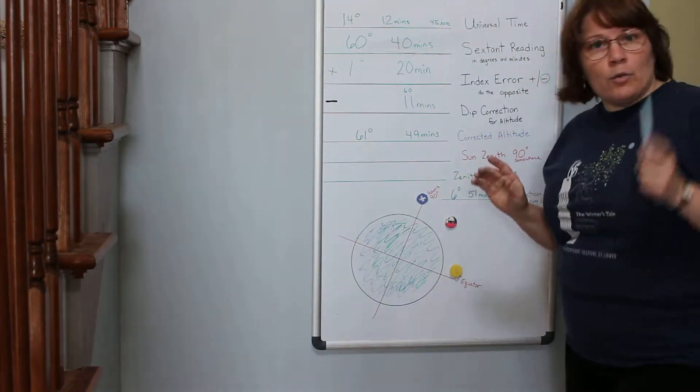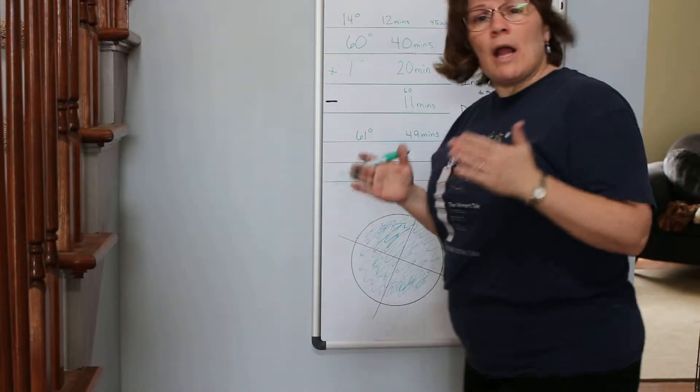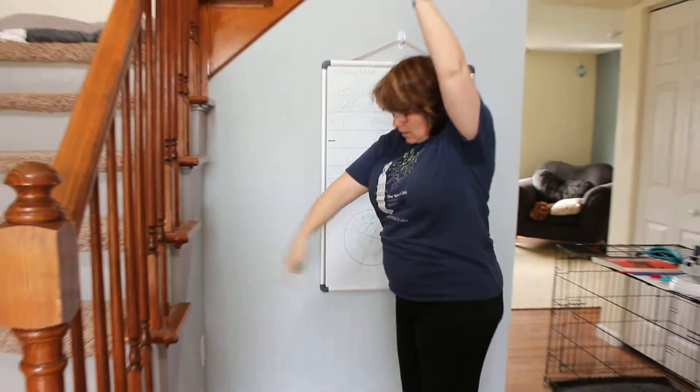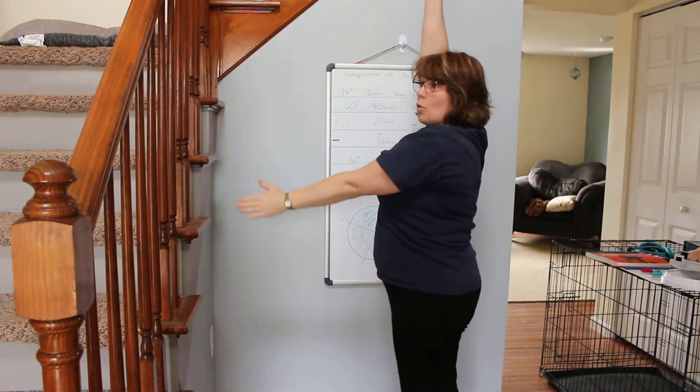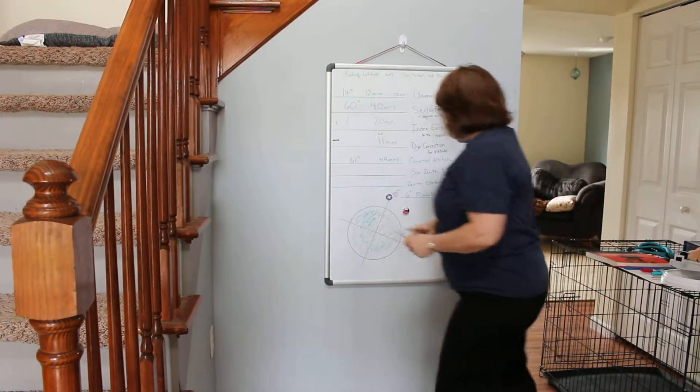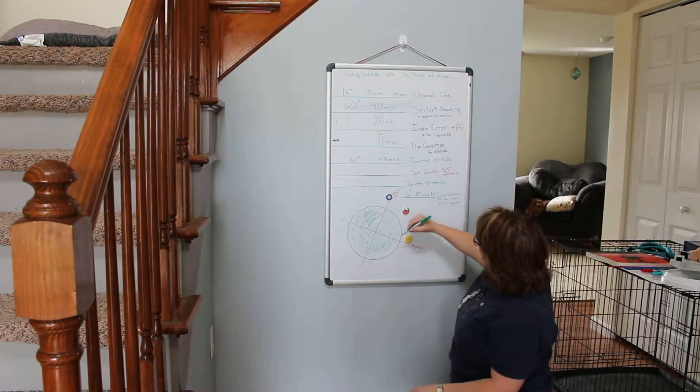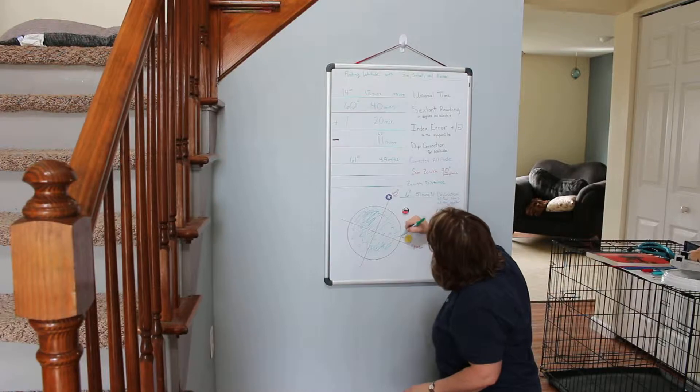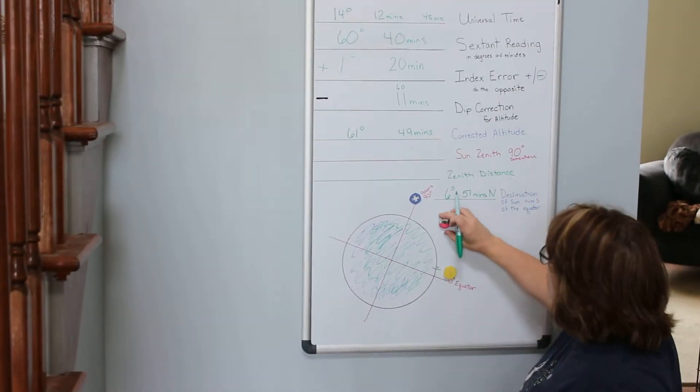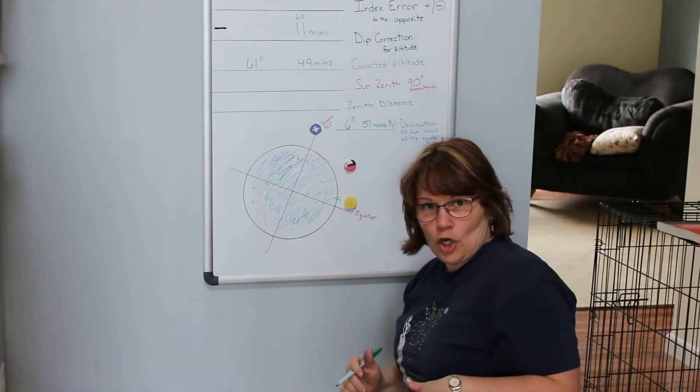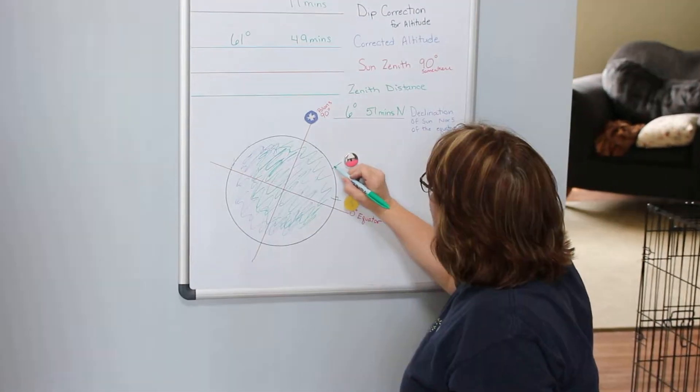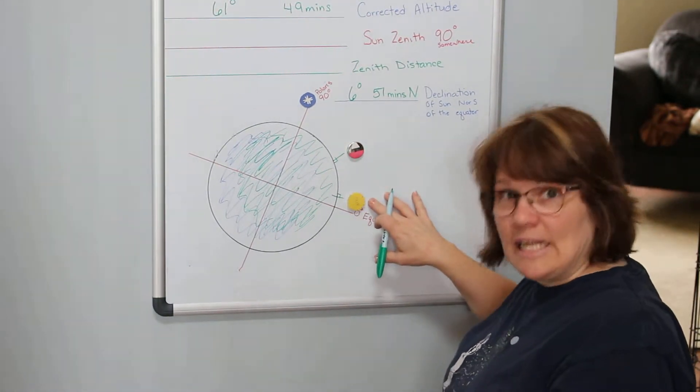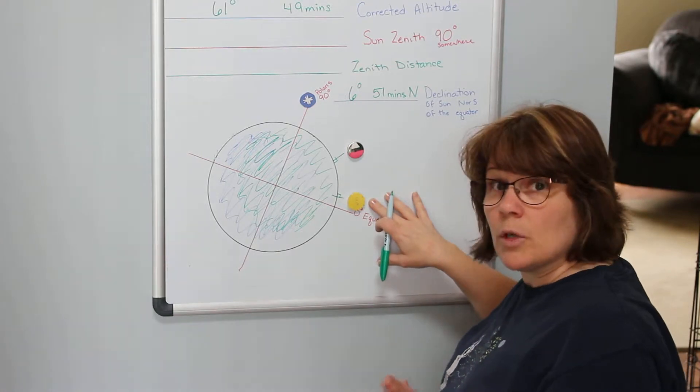We're going to introduce the concept of a zenith. Where I am standing, something is directly over me, that's zenith. That's 90 degrees above me and the earth, as if I were a right angle. Somewhere on earth, the sun is hitting the earth like a pot of gold right underneath it at 90 degrees. And somewhere on earth, I am hitting the earth and standing on the earth at 90 degrees. This is my zenith on earth. This is the sun's zenith on earth.